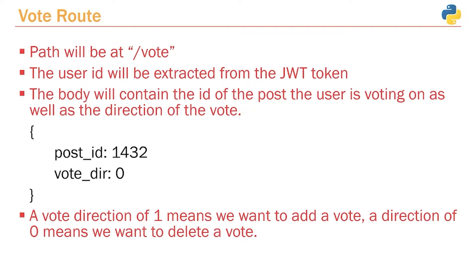The user ID — the user who's trying to vote on or like a post — is going to be extracted from the JWT token. So we don't actually have to extract that from the body. However, the body itself is going to contain two pieces of information: the ID of the post we're trying to like, as well as the direction of the vote. Vote direction of one means we're going to like the post, and a vote direction of zero means we're going to remove our like of the post.